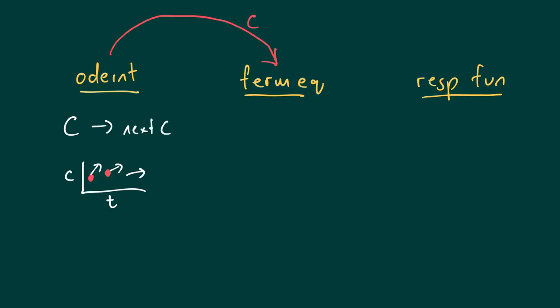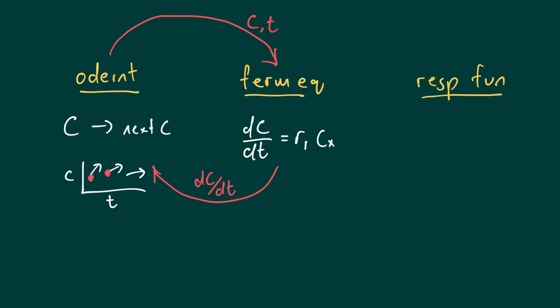What ODE INT does is it communicates with the fermentation equation: it passes over the current concentration and also the current time. The fermentation equation can then do the integration. For a batch reactor system, it reduces to a fairly simple equation — just the specific equation that you have in your notes. Once the concentration c is received from ODE INT, the fermentation equation calculates the slope and returns it — dc/dt is really what is returned.